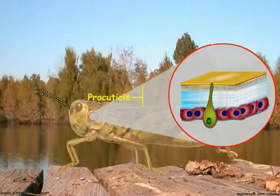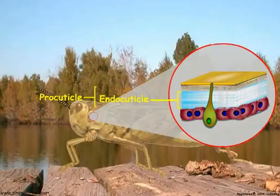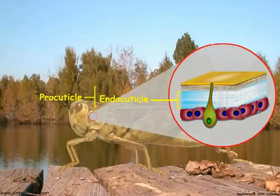After the molt, the procuticle differentiates into the endo-cuticle and the exo-cuticle. The thick inner portion of the cuticle is termed the endo-cuticle. It is usually the thickest layer of the cuticle and is soft and flexible. Endo-cuticle is deposited throughout the time between molts.